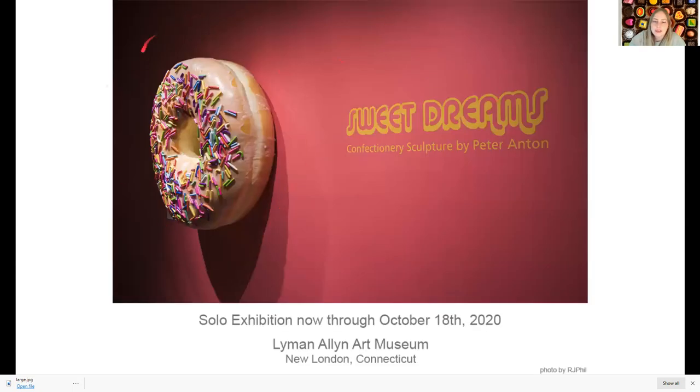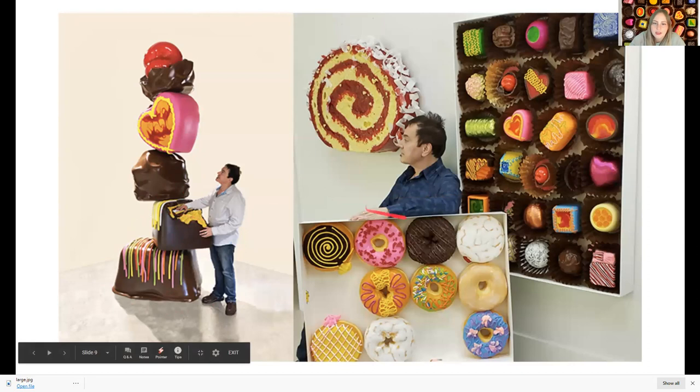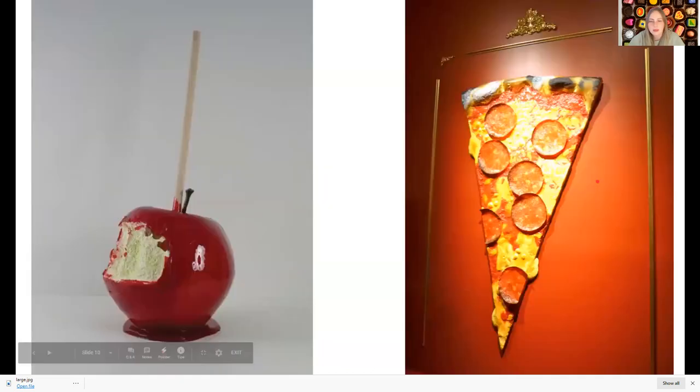So his solo exhibition right now, it's actually in two weeks in Connecticut, is called Sweet Dreams, Confectionary Sculpture by Peter Anton. Look at how tall these sculptures are. Those candies look gigantic. Look at how big the donuts look. And this little strawberry roll back here. So big. Now look at this candied apple. That looks like it has a bite taken out of it. That is almost as big as me. And this pizza is probably taller than me. And it's a sculpture, not real, right? That is so crazy and awesome.